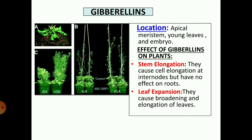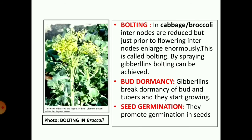Gibberellins are similar to auxins. They are located at the apical meristem, young leaves, and embryo. Their effects on plants: they bring about stem elongation, but this stem elongation is at the internodes, not at the apex. They have no effect on roots. Leaf expansion: they cause broadening and elongation of leaves. Bolting is a very important characteristic feature of gibberellins — in cabbages, broccolis and other plants, internodes are reduced, but just prior to flowering the internodes enlarge enormously; this is called bolting, and by spraying gibberellins, bolting can be artificially induced.